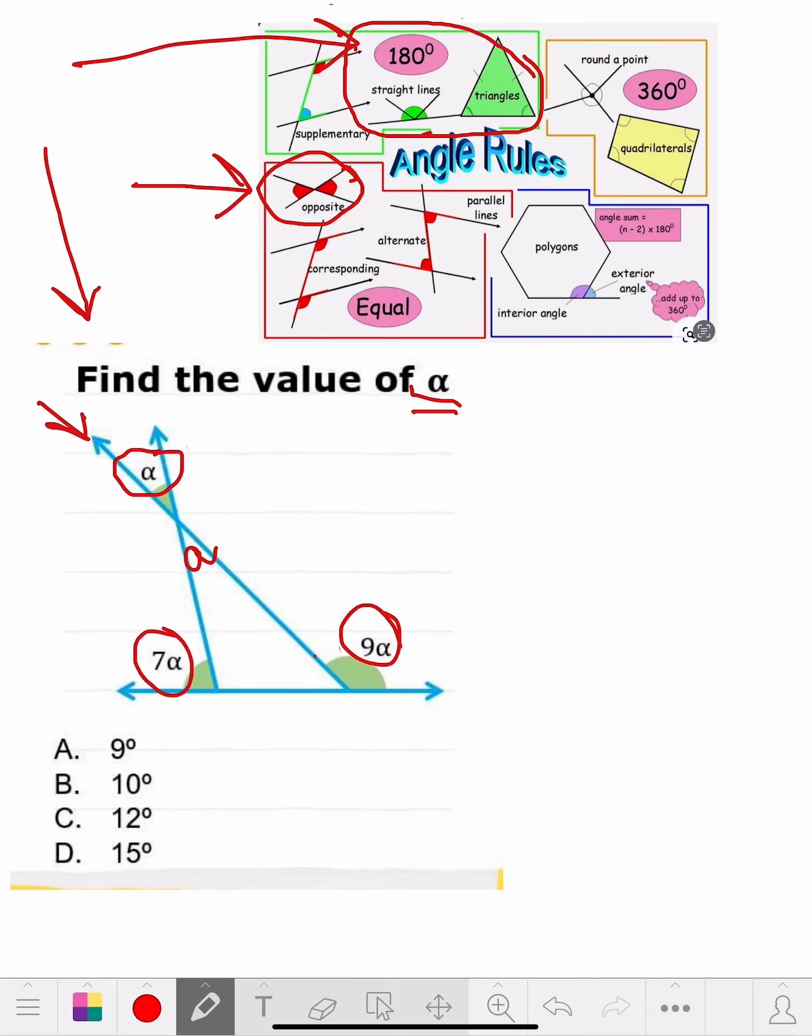So that means this, it's a straight line and that's going to be 180 minus 7A. And that's what that's going to be. And then this side over here is going to be 180 minus 9A. So let's write this in a formula.